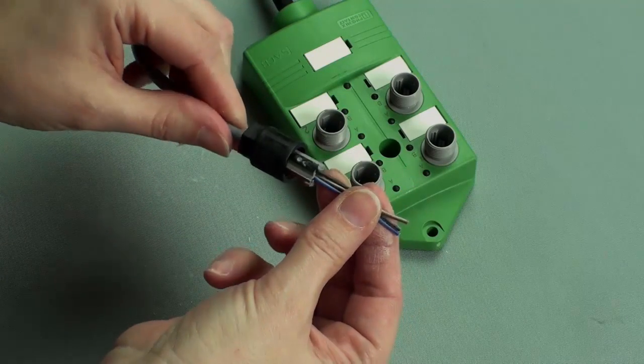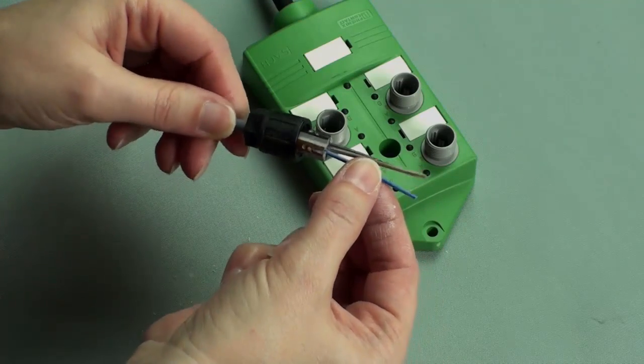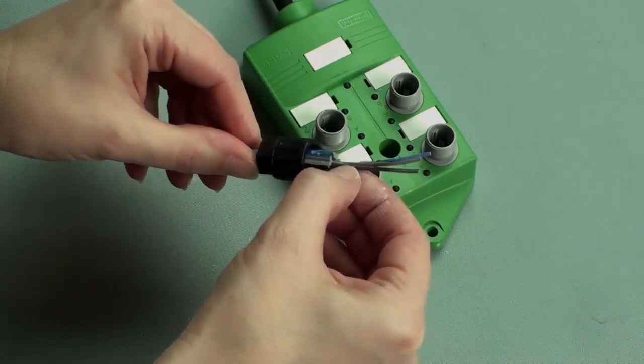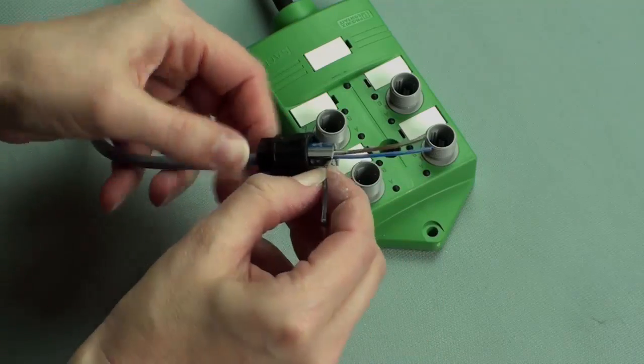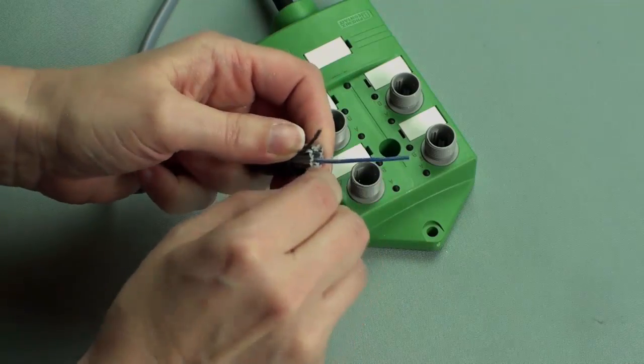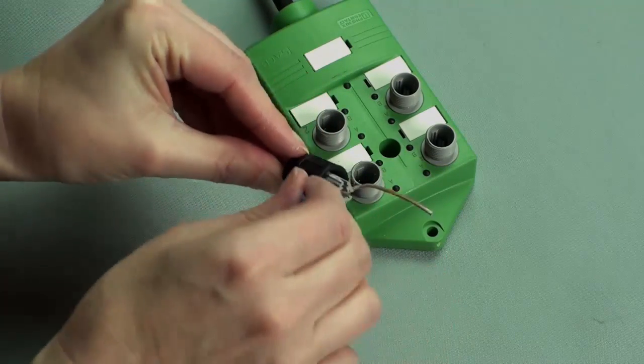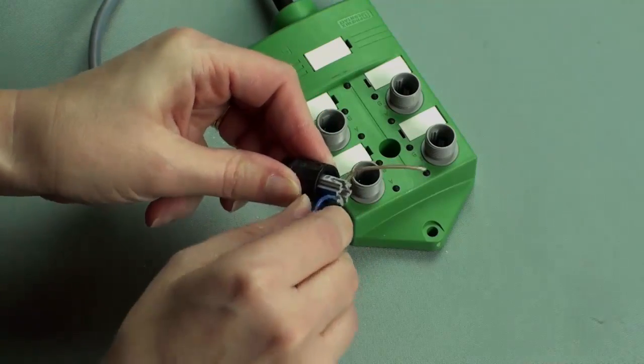You'll notice the connector is color-coded to match the standard sensor lead color code. Simply pull the black wire into the black terminal, brown into brown, and then blue into blue.